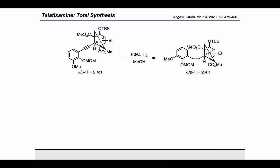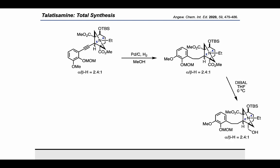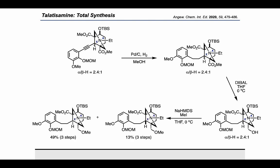The internal alkyne present in this intermediate could be hydrogenated with palladium on carbon, and the methyl ester in the southeast could be reduced with DIBAL, which avoided reduction at the more hindered ester. Then, sodium HMDS and iodomethane could be used to methylate the resulting primary alcohol. The diastereomer shown on the left, obtained in 49% yield over 3 steps, is the one they carried on.